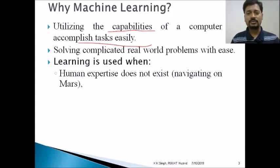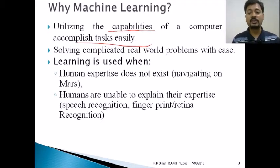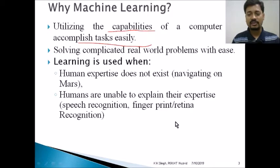Machine learning is used mainly in places where human expertise does not exist — for example, navigating on Mars. Also in places where humans are unable to explain their expertise. For example, speech recognition. Although we can recognize the speech of a person very easily, how is it performed? We do not know, we cannot explain. Traditional algorithms may not suit well to explain such complicated problems.